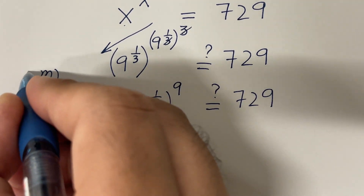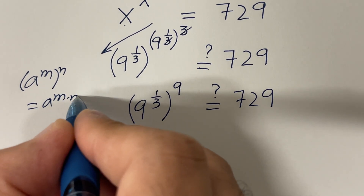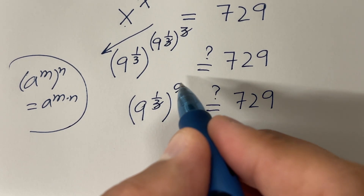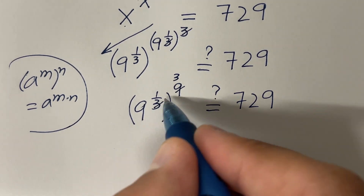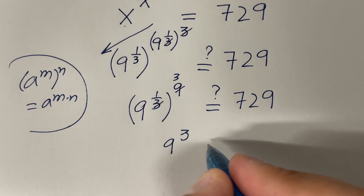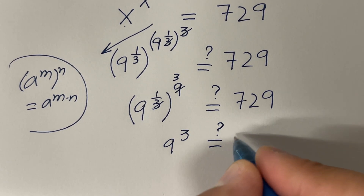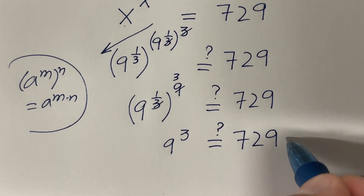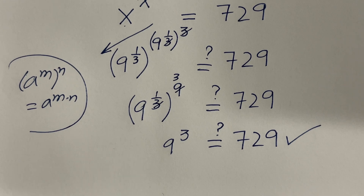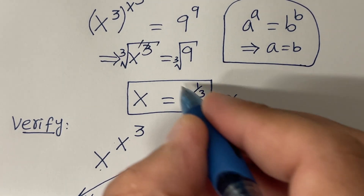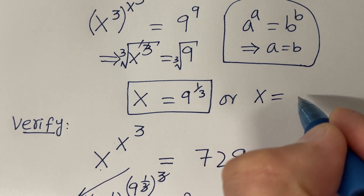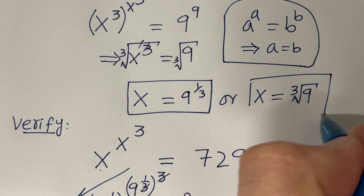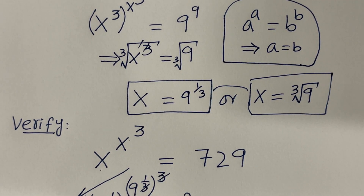Using the law of indices again — multiply these exponents, 3 times 3 is 9 — so the left hand side is 9 raised to the power 3, and on the right hand side we have 729. You can see that 9 raised to the power 3 is 729, so this satisfies the given equation. Therefore our answer is x equal to 9 raised to the power 1 over 3, which can also be written as the cube root of 9. Both are different forms of the same answer.